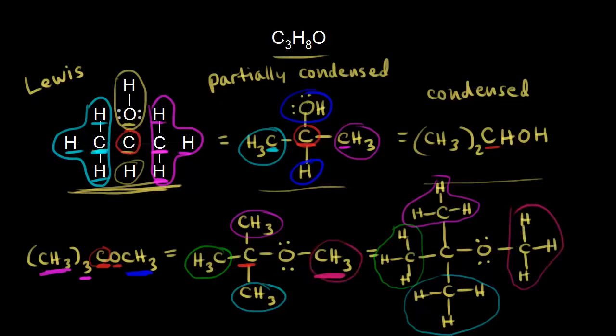That's an important skill: being able to go from a condensed to a partially condensed to a full Lewis dot structure, and also going the opposite direction. Usually you'll only see these representations used for small molecules. For larger organic molecules, you'll see almost exclusively bond line structures, and we'll look at those in the next video.